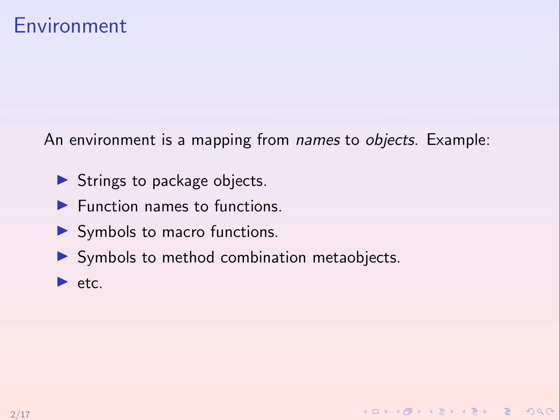In general, an environment can be seen as a mapping from names to objects. For example, there could be a mapping from strings to package objects, a mapping from function names to functions, a mapping from symbols to macro functions, a mapping from symbols to method combination meta-objects, and so forth.